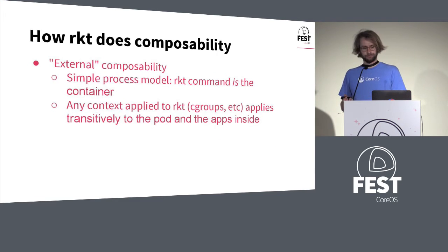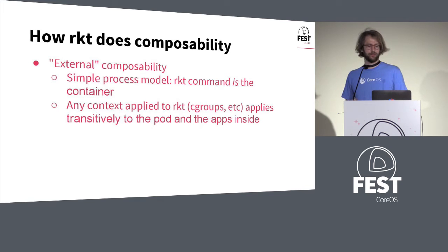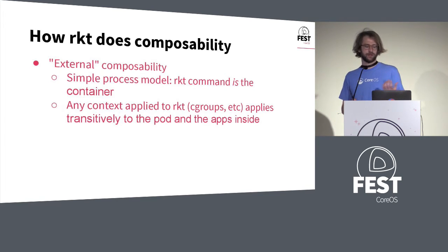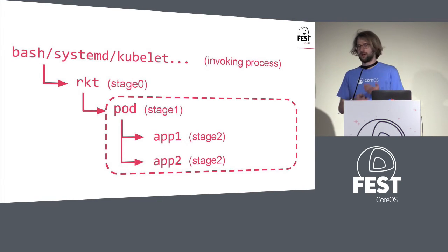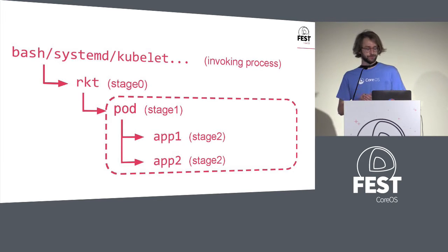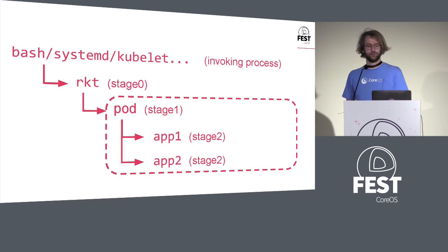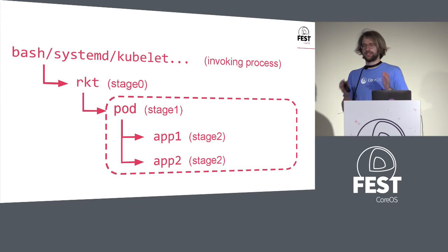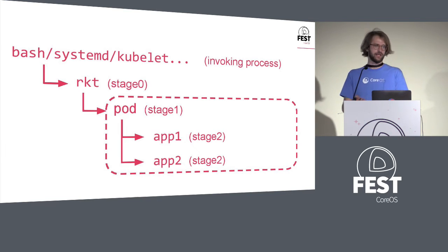Looking at external composability: in Rocket, the Unix process model is fundamental. When you run a Rocket command, that is the whole container. Any context you apply — cgroups, constraints, any namespaces you start the Rocket container in — are applied to the whole pod of all the applications running in the container. The invoking process, which could be a shell, your init system like systemd, or the kubelet in Kubernetes, is responsible for invoking Rocket in what we call stage zero, which is basically the API or CLI to Rocket. Rocket then has two more stages — stage one and stage two — where the actual execution of the apps and the pod happens. Stage one provides the abstraction of the pod, and this is where most of the containment happens, setting up cgroups and namespaces. Within that context, your actual applications run.